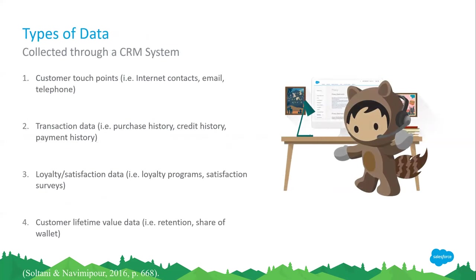A CRM system collects many different types of data, and I group them in four broad categories. First, you have your customer touch points — that's your internet contacts, which in Salesforce would be called a lead — as well as email and telephone. You also have transactional data such as purchase history.